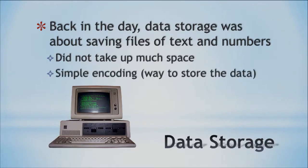And also very simple encoding. There were like three or four ways to encode numbers — might be a whole number or could be a decimal number. And for text, we talked about ASCII codes before — we have a certain code for each English letter. And that was it.